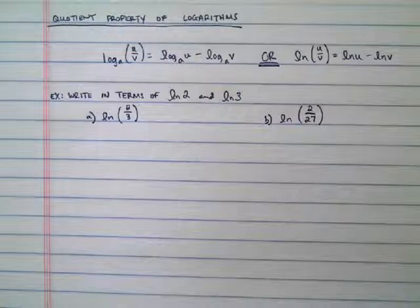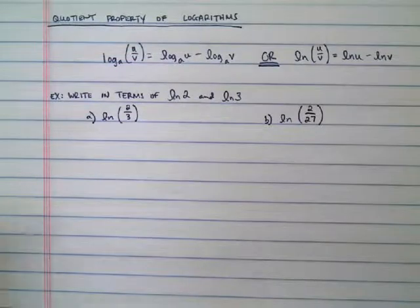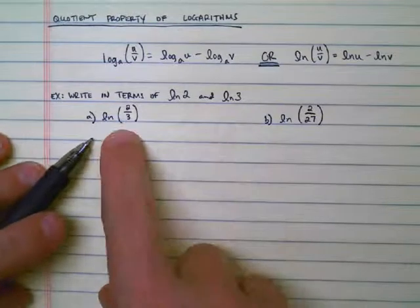An example problem - a typical thing you might see in a textbook - is going to say write this in terms of ln 2 and ln 3. So maybe they give you ln(2/3).